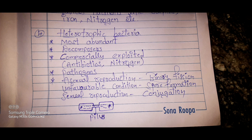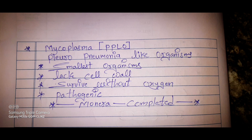So these are the four classes of bacteria under Monera: Archaebacteria, Eubacteria, Chemosynthetic autotrophic bacteria, and Heterotrophic bacteria. Next is Mycoplasma, also called PPLO — Pleuropneumonia-like organisms. These are the smallest organisms among all, and they lack a cell wall. They survive without oxygen. They are highly pathogenic — disease-causing organisms. This completes our study of Monera.